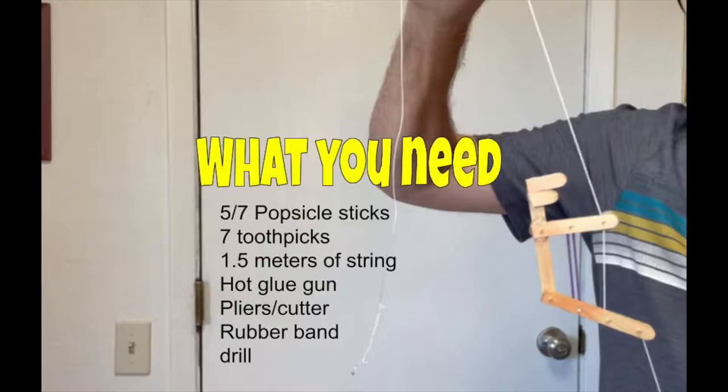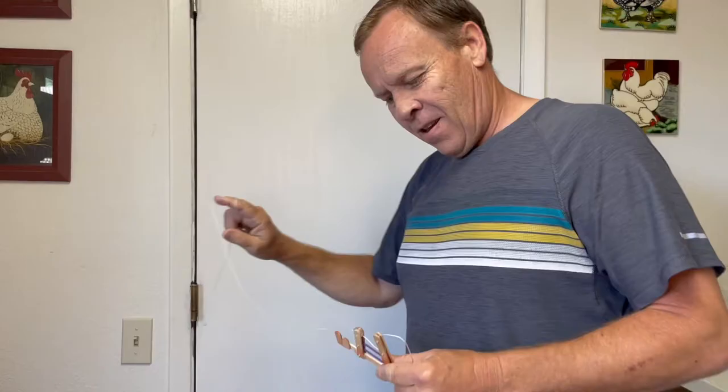What you need for this experiment is five to seven popsicles, seven toothpicks, one and a half meters of string (about three feet), hot glue gun, pliers, a cutter, rubber band, and a drill.